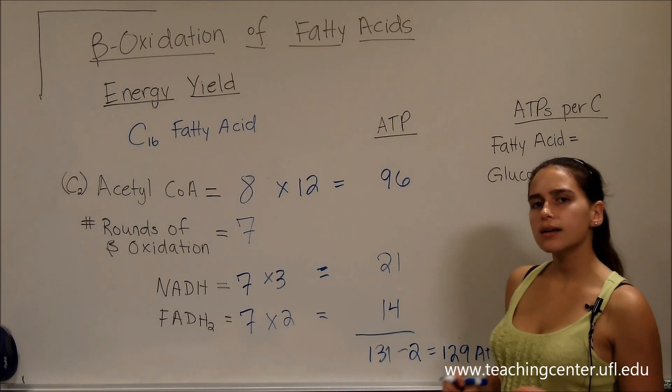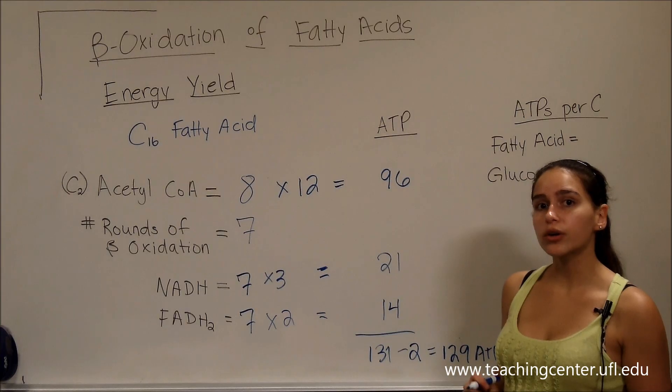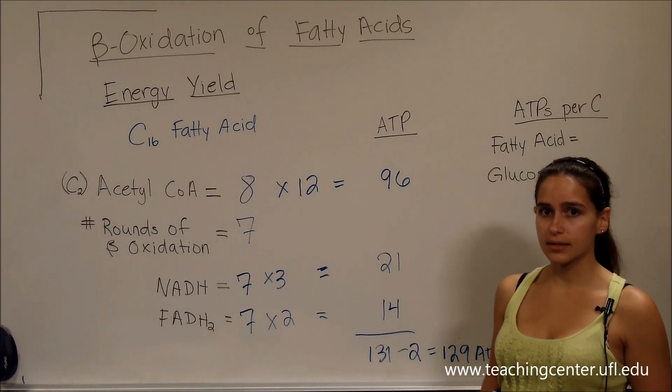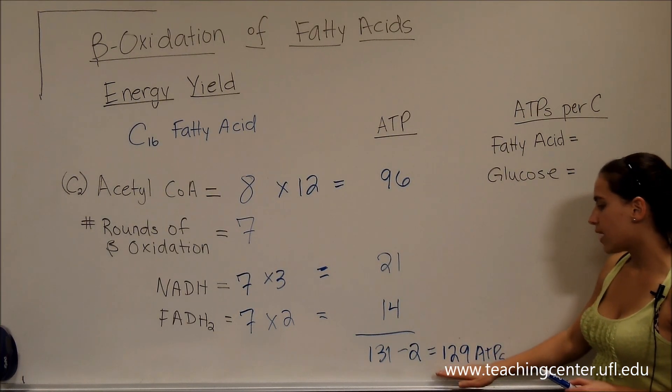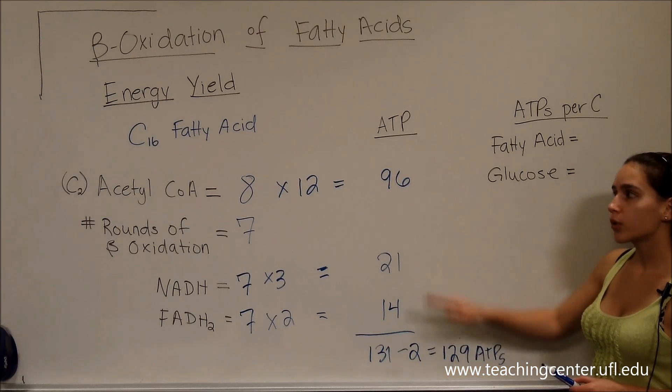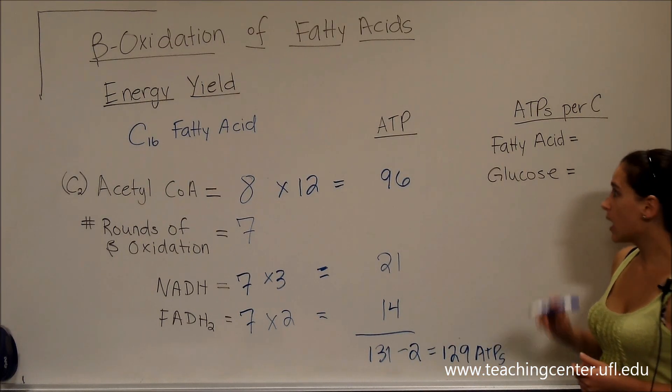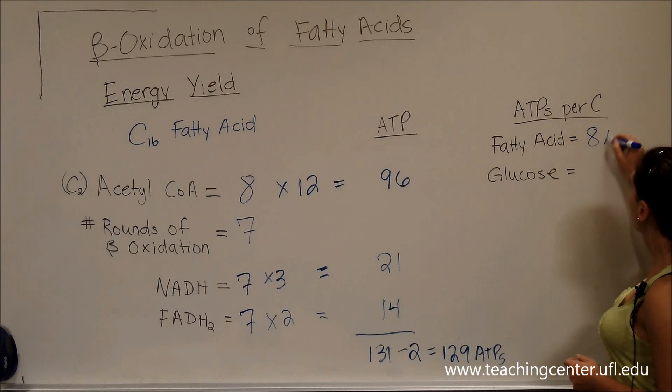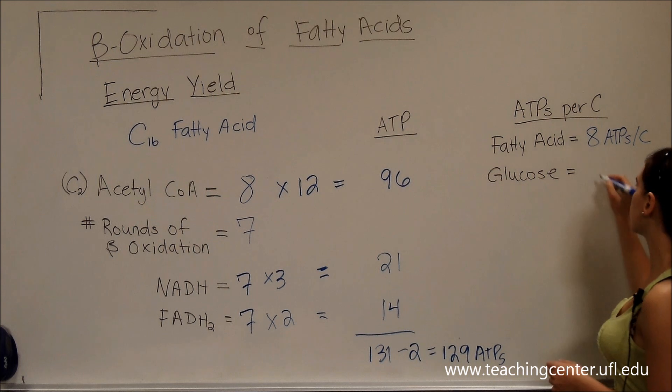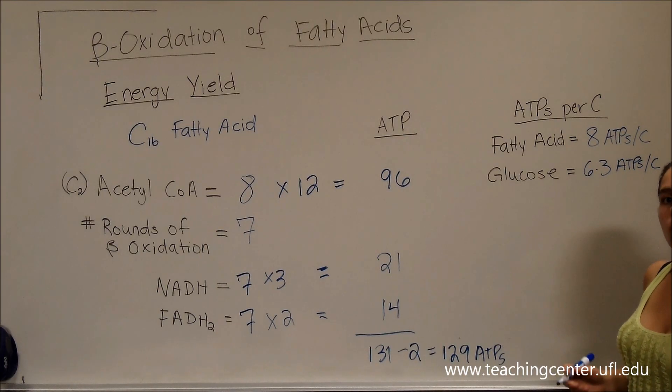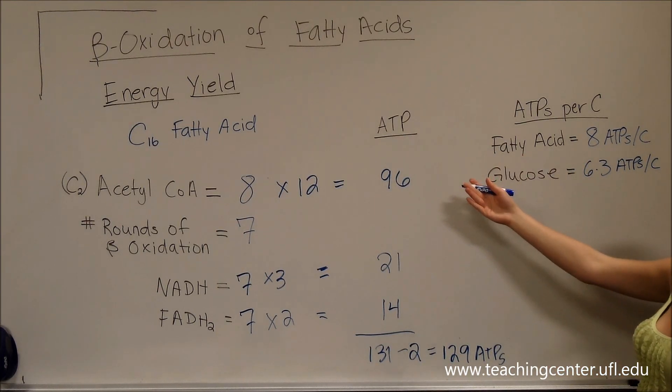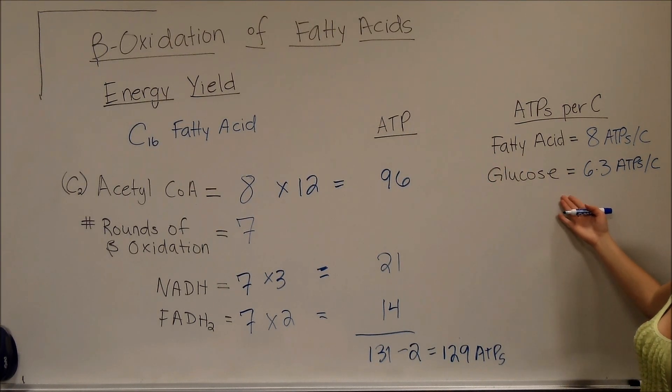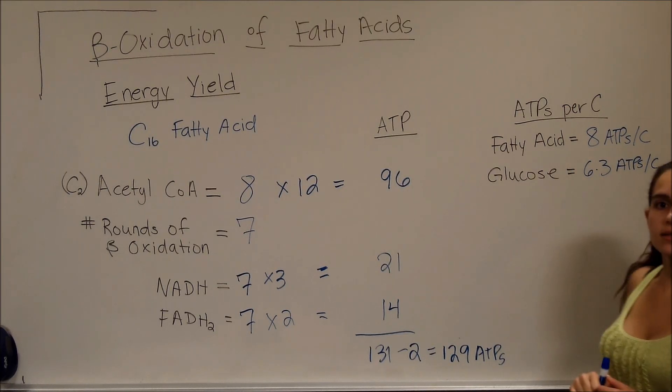So does beta oxidation give us more or less energy than glycolysis? If we look at it, if we divide 129 per 16, that's going to be 8 ATPs per 1 carbon, as opposed to glucose, which is going to be 6.3 ATPs per 1 carbon. So beta oxidation is going to give us more energy per carbon than glycolysis.